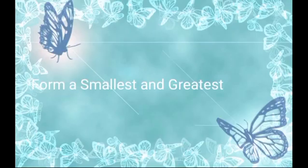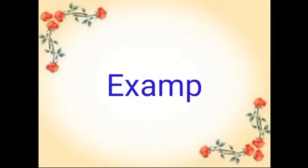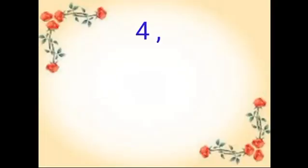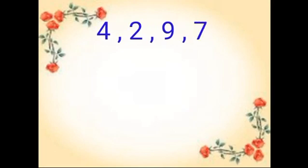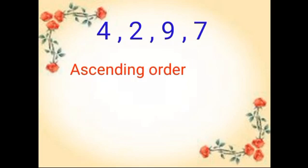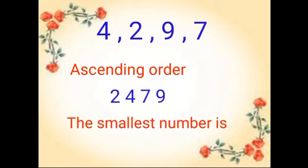First, we will learn about how to form the smallest and greatest numbers using the digits only once. Let us take the digits 4, 2, 9, 7. To form the smallest number, we arrange the digits in ascending order: 2, 4, 7, 9. So the smallest number is 2,479.